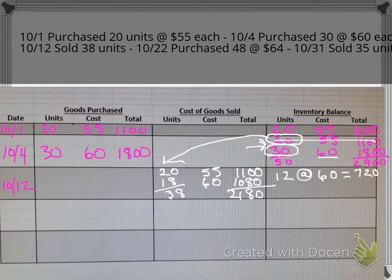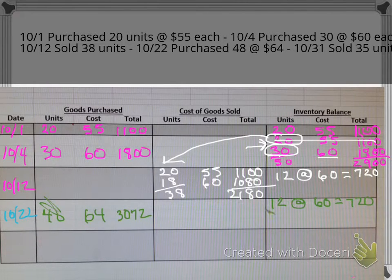Let's go on to the next item, which is on October 22nd. We purchased 48 at $64. So we have 12 at $60, which we said was $720, and now we're going to bring in the new 48 at $64, and that was $3,072. I went ahead and totaled those up, so we have 60 units, $3,792 would be the cost for all those 60.